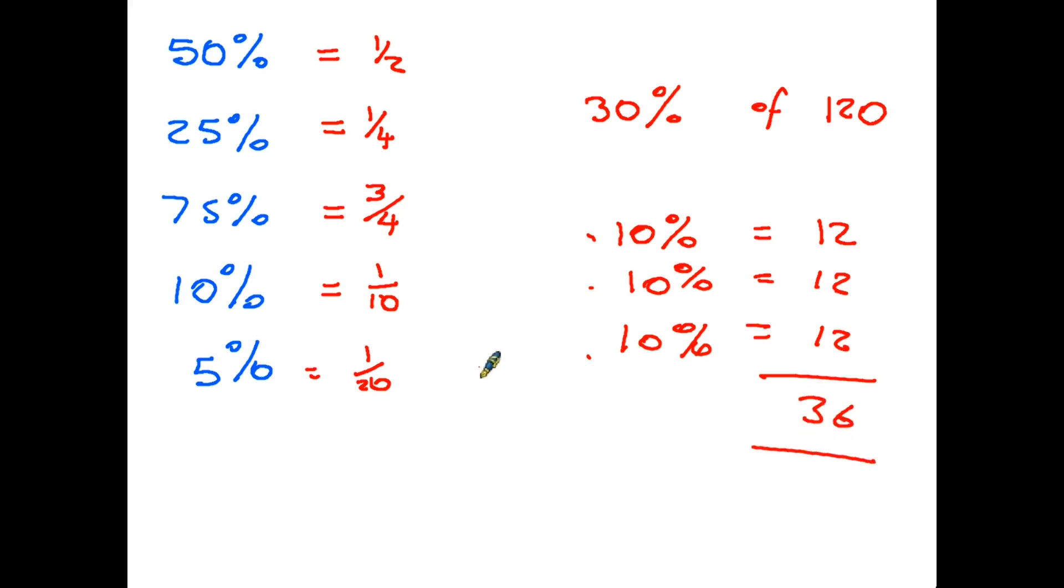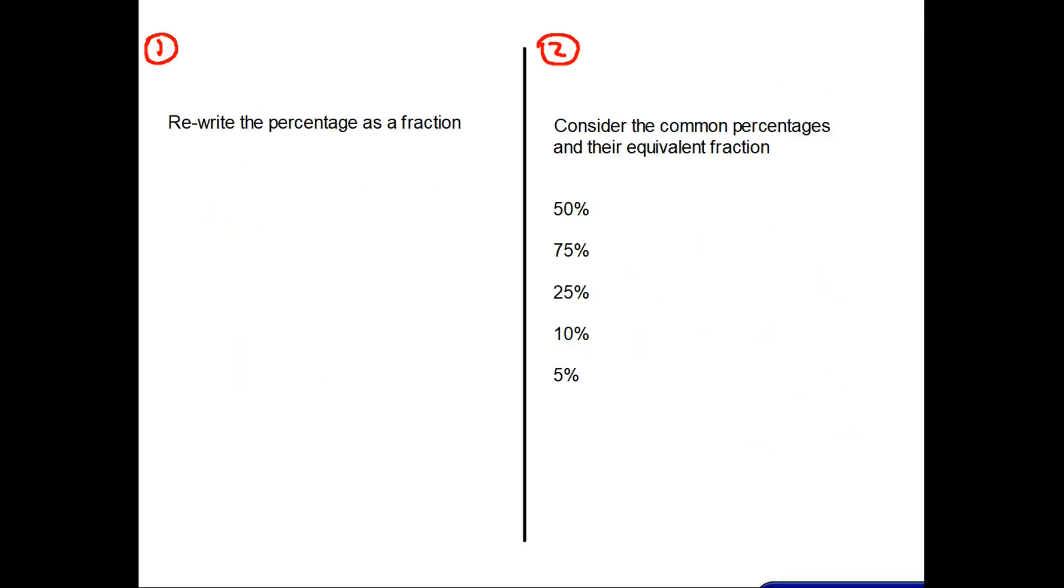So let's have a little summary here. Two methods, and you'll notice that in both methods of finding percentages we end up using fractions. So Method 1, and again probably most useful in a calculator exam but just as applicable if you know how to multiply and divide: if we are looking to find 40 percent of 160, we simply rewrite it as 40 over 100 of 160, and then we use the fraction method.